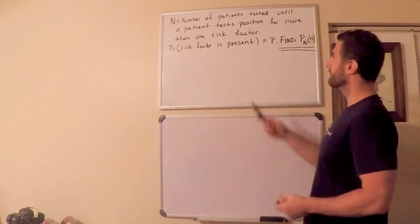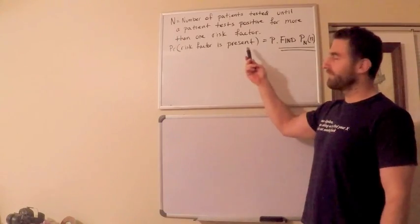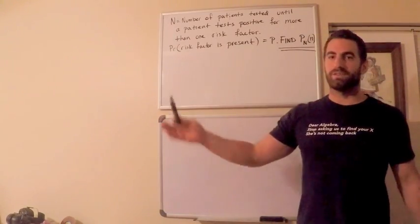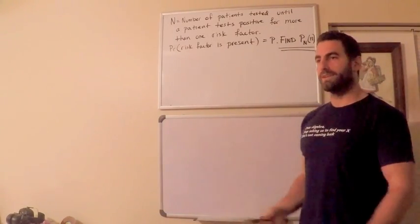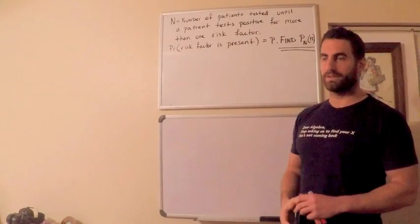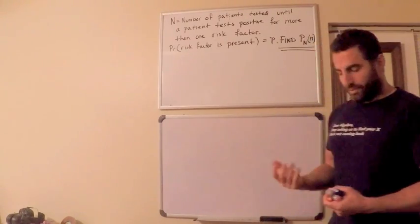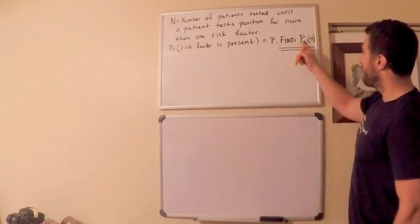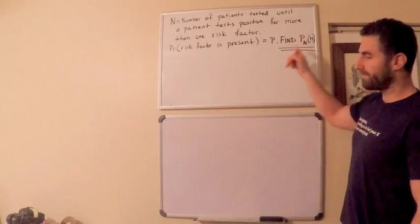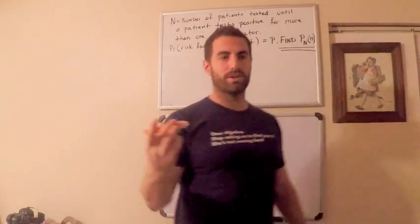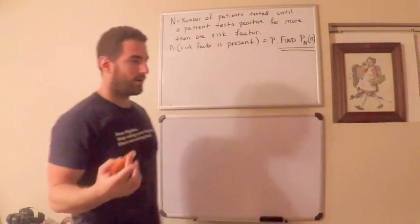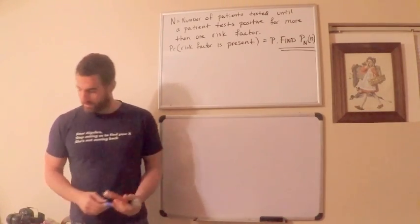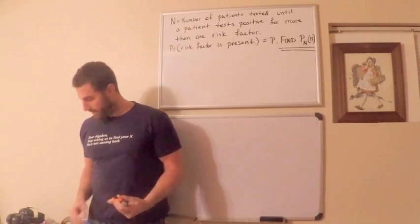We're given that the probability of risk factors present is p. Also, having a risk factor is independent of having one of the three risk factors. The way I like to approach a problem like this, since we're looking for the mass function, is to just start out with cases. What I mean here is to start out with when n is 1.